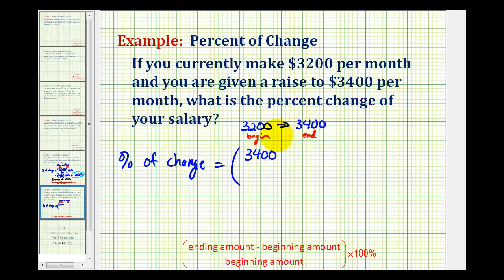So 3,400 minus 3,200, and we'll divide this by the beginning amount which is $3,200.